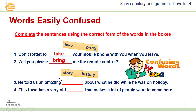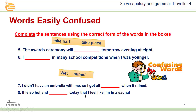Numbers three and four: story and history. Number three: He told us an amazing story about what he did while he was on holiday. Number four: This town has a very old history that makes a lot of people want to come here. The answer to number three is 'story' and number four is 'history'.